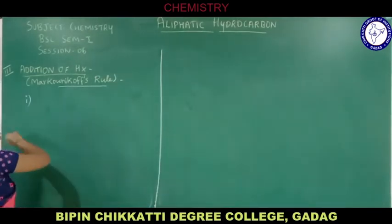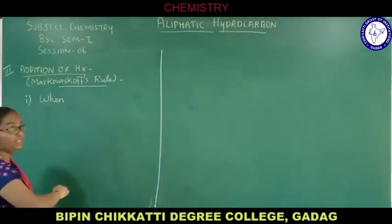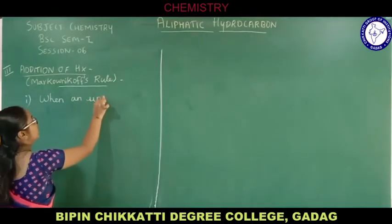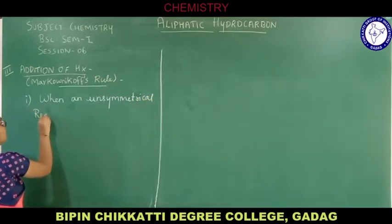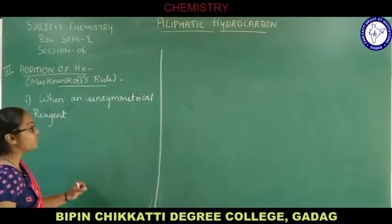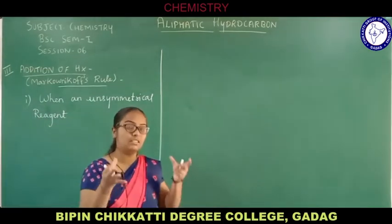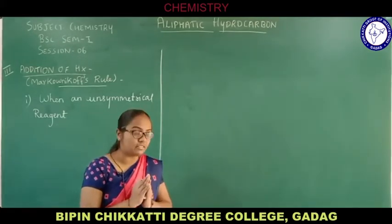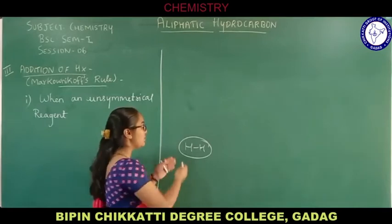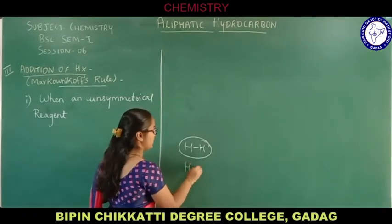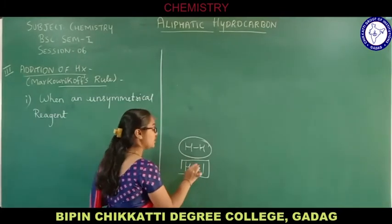Let us write down a statement about the Markovnikov rule. It says: when an unsymmetrical reagent — now, unsymmetrical means two atoms in that particular molecule differ from each other, they are not similar. Like hydrogen (H₂) is a symmetrical molecule, but HCl is an unsymmetrical molecule because one hydrogen and one chlorine are present.